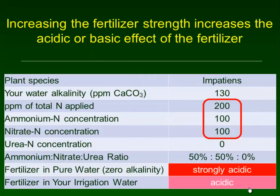We can vary some of these assumptions. For example, if we move from 100 ppm to 200 ppm nitrogen, we had an acidic fertilizer and now it's strongly acidic — so acidic that it is going to push pH down and be more acidic than the alkalinity of the water. Increasing the fertilizer strength increases the acidic or basic effect of the fertilizer.